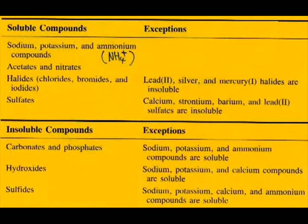And if you go further down, you see the chloride, bromide, and iodide ions. Now those are typically soluble, though there are a few exceptions. Those exceptions mean that even though chloride, bromide, and iodide are typically soluble, there are some things that if they're paired with them, they're going to end up being insoluble. The exceptions are going to be on the right-hand side, and for these particular halides, those exceptions are when they're paired with silver, mercury, or lead — and if they are, then they're going to be insoluble.